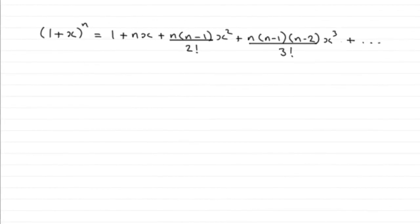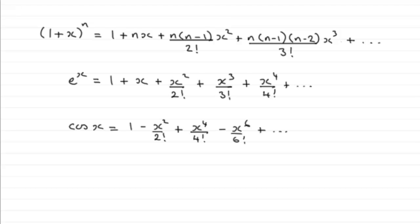In the past we've seen that we can expand things like (1 + x)^n using the binomial expansion, which is a series in ascending powers of x, often known as a power series. What I want to introduce you to in this particular video is something called the Maclaurin series, which will enable us to develop expansions for functions like e^x, cos x, sin x, natural log of (1 + x), and so on.